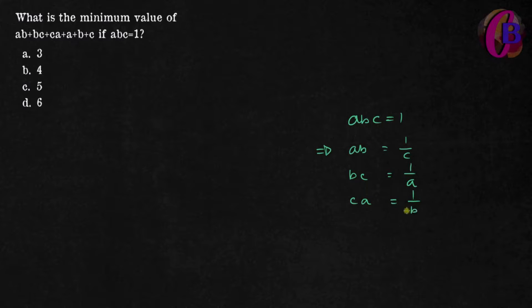And ca equals 1/b. Using these relationships, we can apply the AM-GM inequality to find the minimum value.